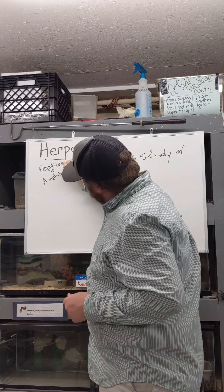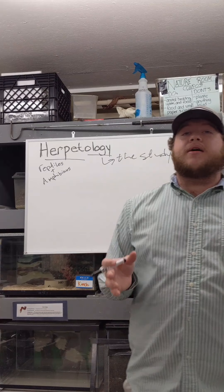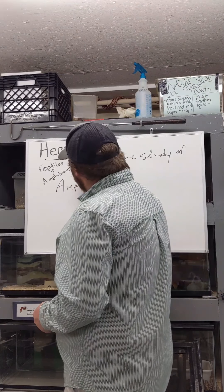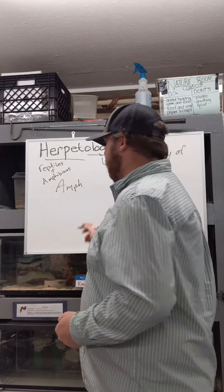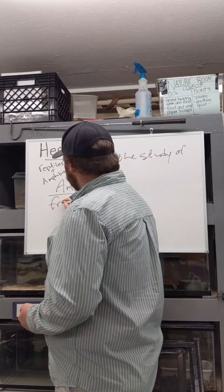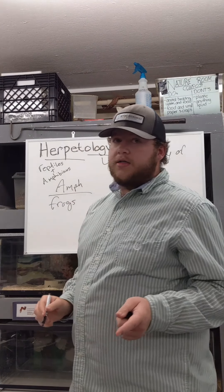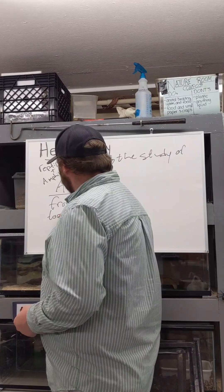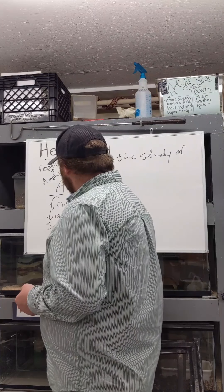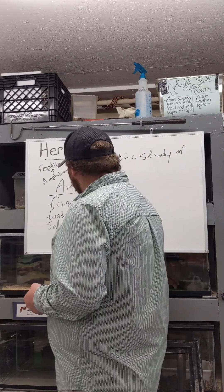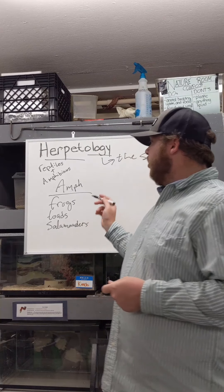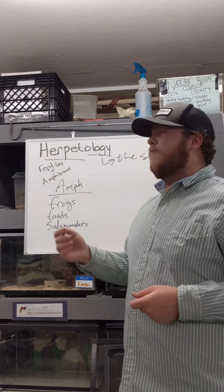What I like to do to start is list some reptiles and amphibians so we have a better idea of what we're talking about. Some examples of amphibians are frogs, toads — which I call ugly frogs — and salamanders. Some salamanders are newts, but not all newts are salamanders, so we can group them all as salamanders. These are the main three things to think about when we think about amphibians.